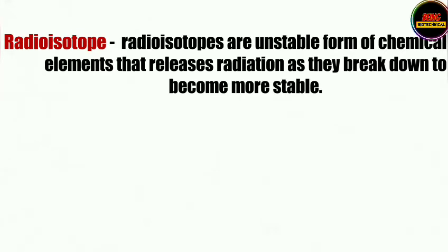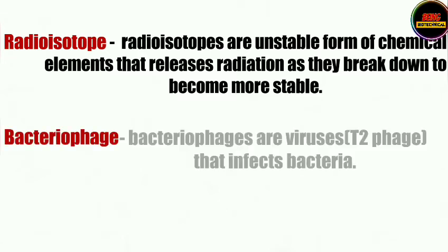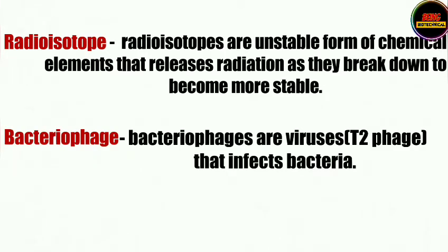Radioisotopes are unstable forms of chemical elements that release radiation as they break down to become more stable. They also used bacteriophages, which are viruses that infect bacteria. As we know, viruses are of many different categories — few infect animals, few infect plants, and those that infect bacteria are known as bacteriophages.